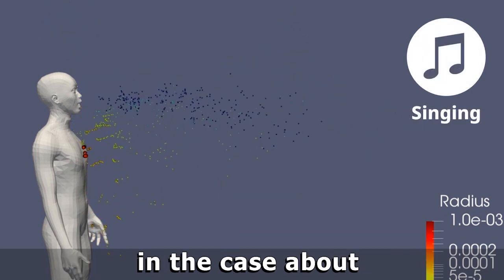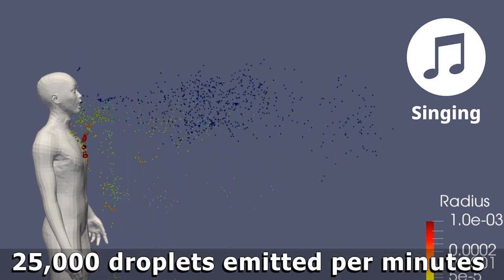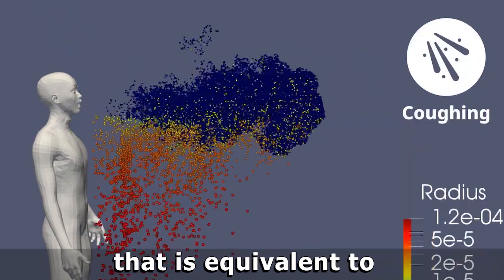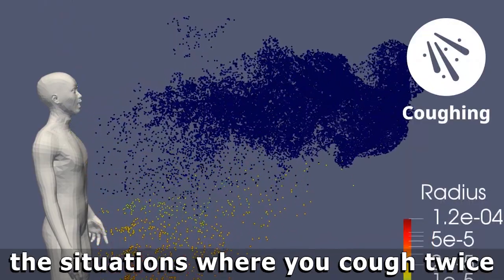when you sing, about 25,000 droplets are emitted per minute. That is equivalent to the situations when you cough twice.